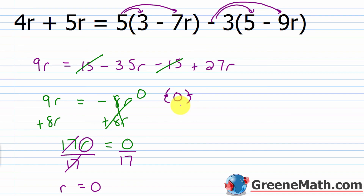If you want to check this, just plug a 0 in for each R in the original equation — there are four instances. You'll see that the left and the right side give you the same value, confirming your solution is correct.